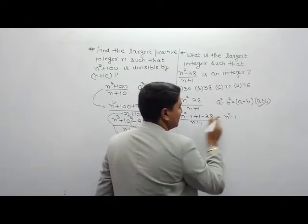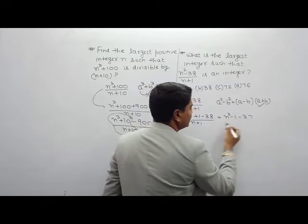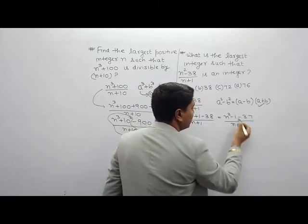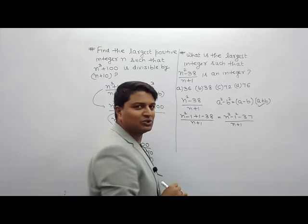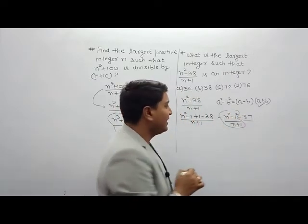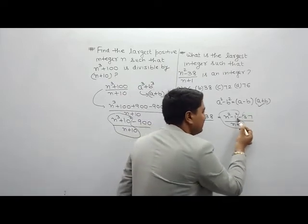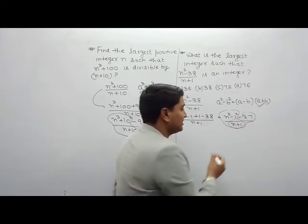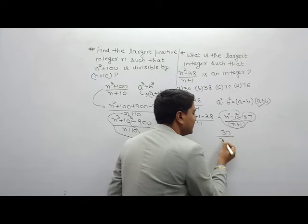This is n square minus 1. How much will this be? 37 will be divided by n plus 1. Now, this is a square minus b square. This is always n plus 1, this is always integer. Now, the entire expression should be divided by n plus 1.